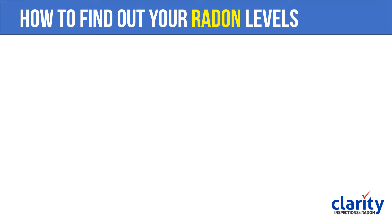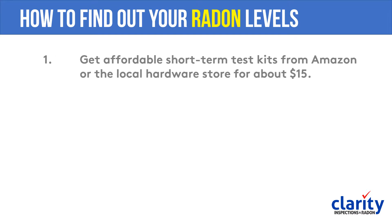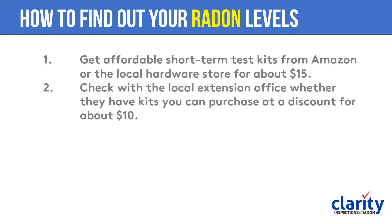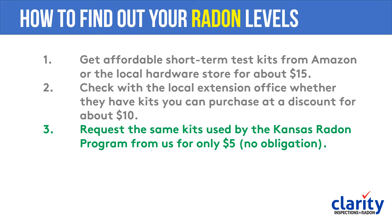So how do you find out your radon levels? You could get an affordable kit from Amazon or from a local hardware store for about $15. You could get a very similar kit from your local extension office for about $10 when they have them. Or you could request a kit from us for about $5. We buy them in bulk and pass the savings on to you, because we think everybody should know their radon levels. If you have high radon, we'd hope you'd consider hiring us to fix it, though there's no obligation.